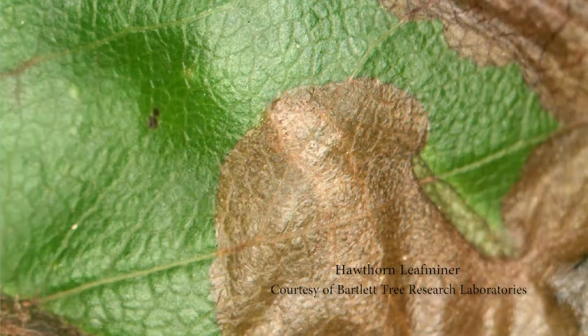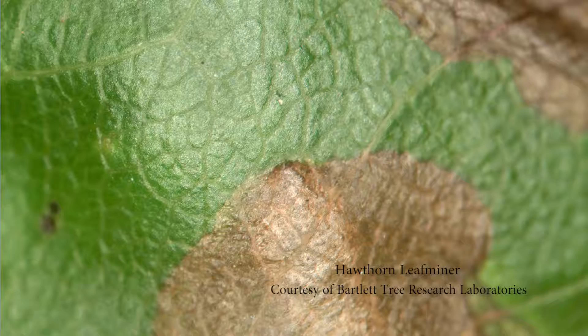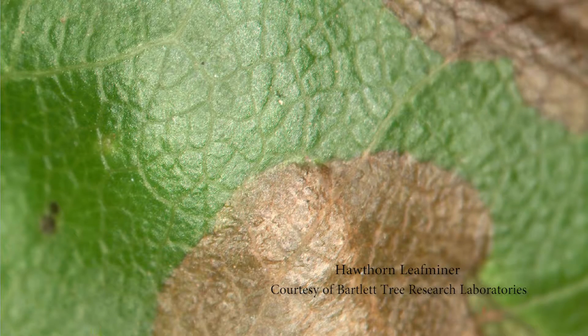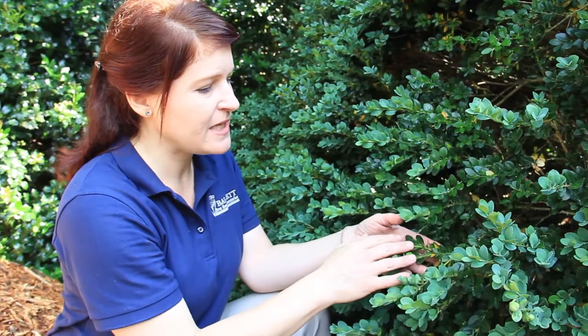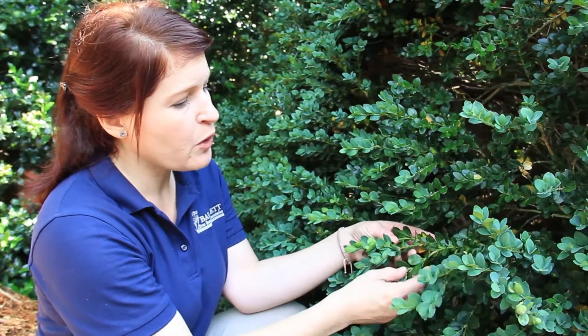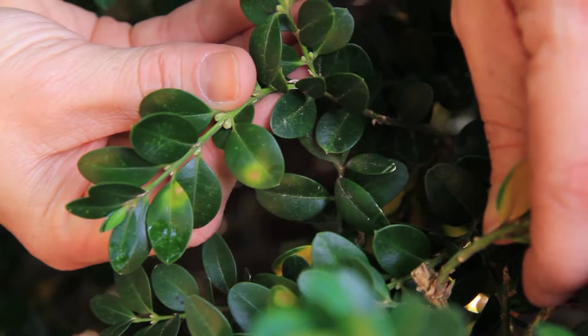Another way that insects can damage plants is by mining between the leaves — between the top layer and the bottom layer of the leaf, they're actually inside and feeding. This can make them very difficult to control. For example, a common pest on boxwood is the boxwood leaf miner, and what you typically see on older growth is yellowing spots.